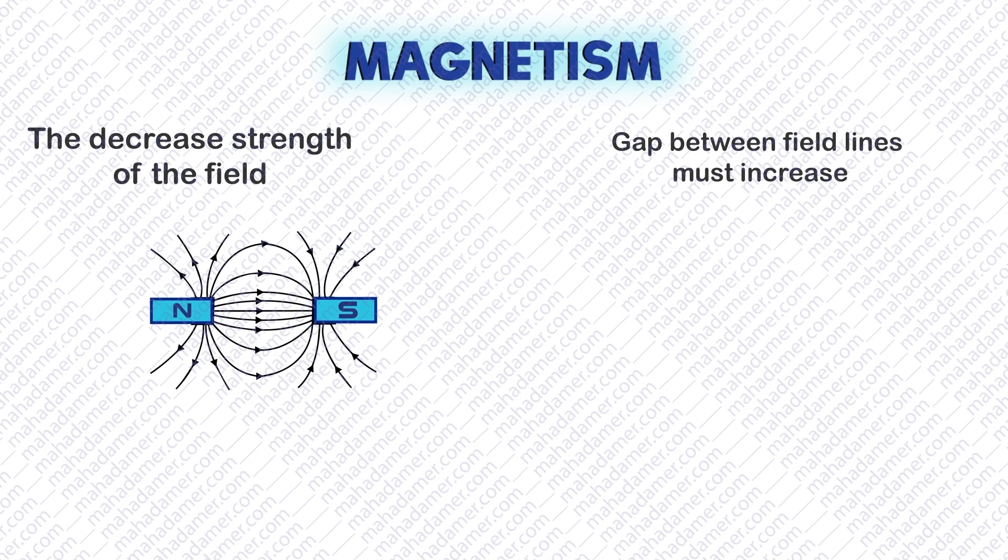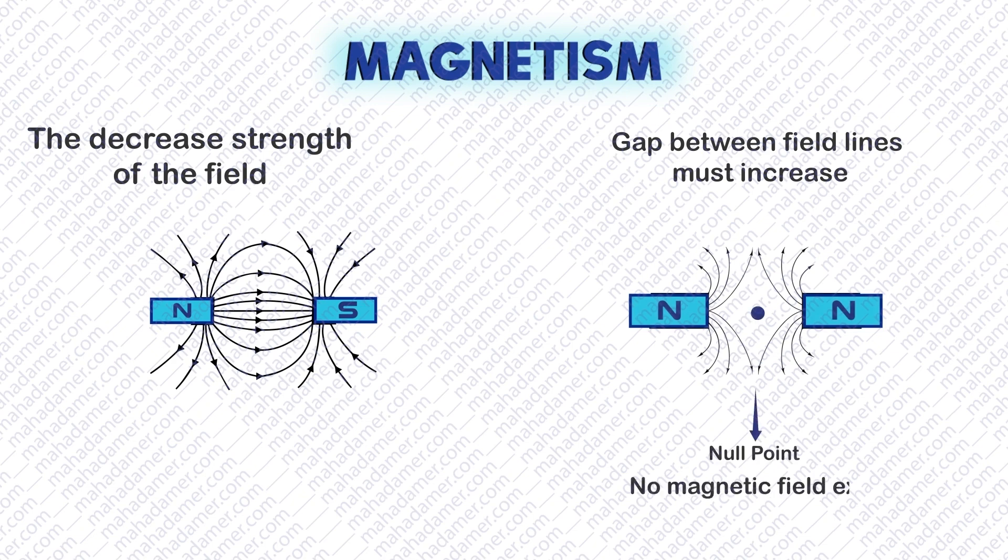Secondly, when we bring two like poles together, for example a North and North Pole, the field lines go away from one another. And there is a point in the middle that is known as a null point where there is no magnetic field.